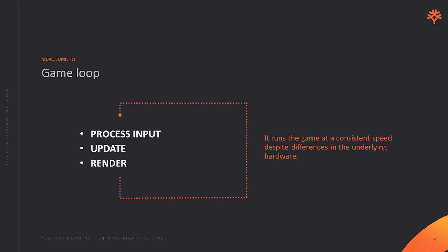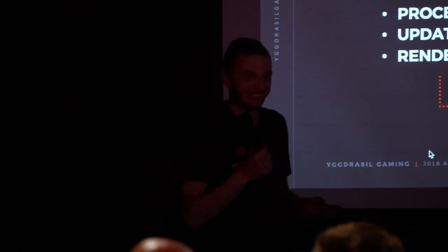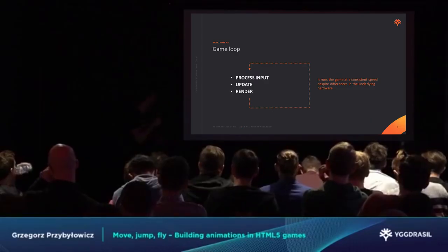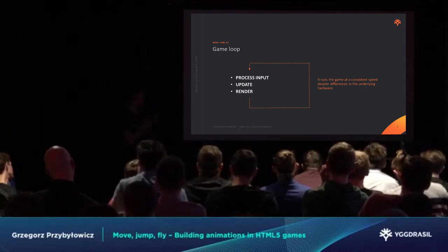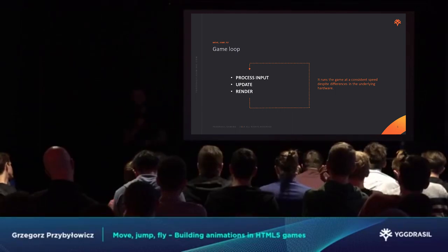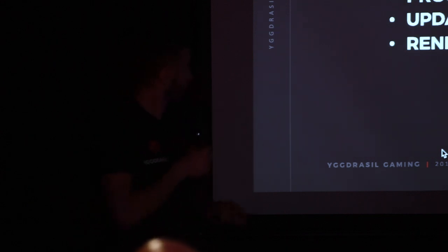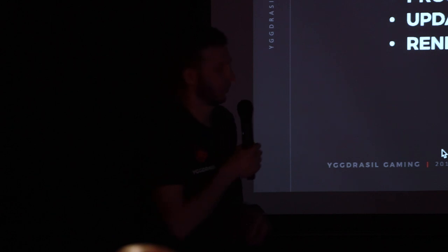But let's start with the basics — the game loop — because I believe this is super important, and every game developer should know what a game loop is, what it does, and why we need it. So a game loop, as the name suggests, is a loop. You can point out three steps in every iteration: process input (which should be non-blocking), update (where we have all the calculations for AI, physics simulations, etc.), and finally render, where we can use WebGL, Pixi, and different engines.